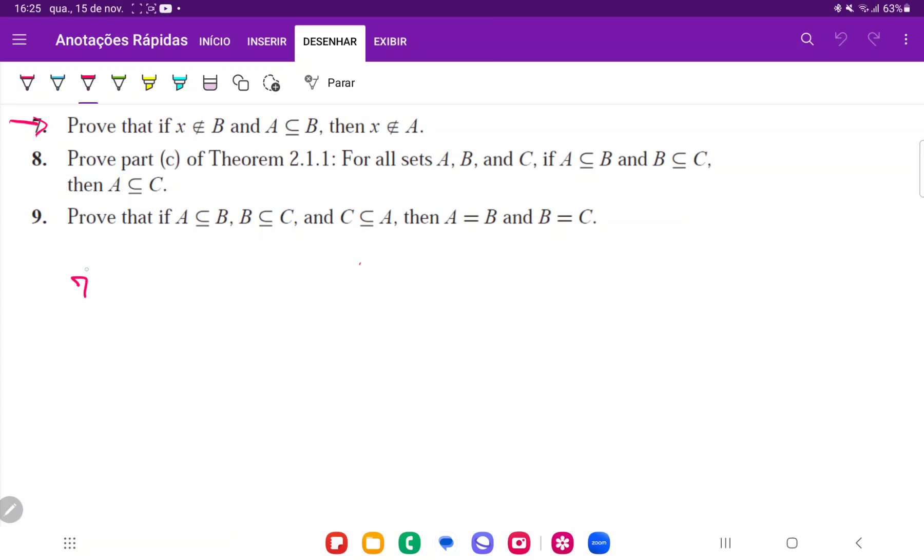First thing we're going to do is assume that these are true. So assume that x is not an element of B, and A is a subset of B. We want to show that x is not in A, and the way that we're going to do this is by contradiction.